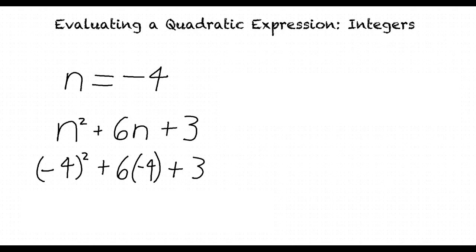Negative 4 squared equals negative 4 times negative 4, which is equal to positive 16, since the product of two negative numbers results in a positive number. Oh yeah, that's right.